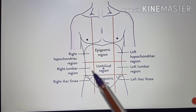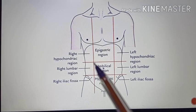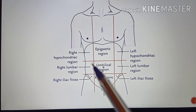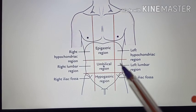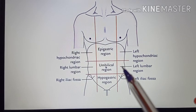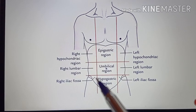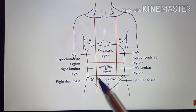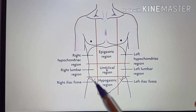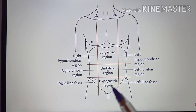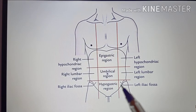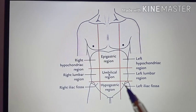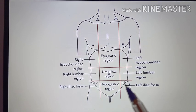Pain arising from the right lumbar region is due to the right kidney. In the umbilical region, pain is from the small intestine. Left lumbar region pain is from the left kidney. Pain in the right iliac fossa is mainly from the vermiform appendix. Pain in the hypogastric region is from the urinary bladder, and pain arising from the left iliac fossa may be due to the sigmoid colon.